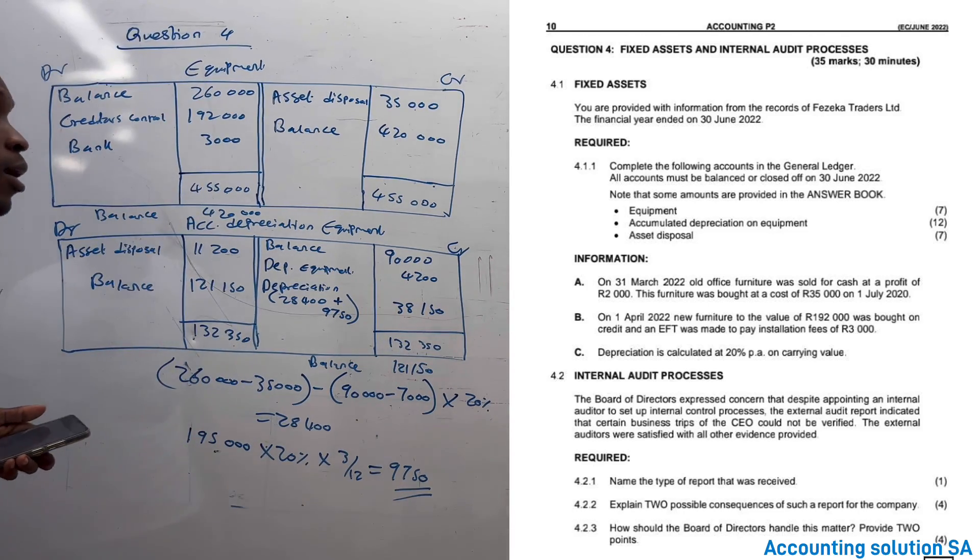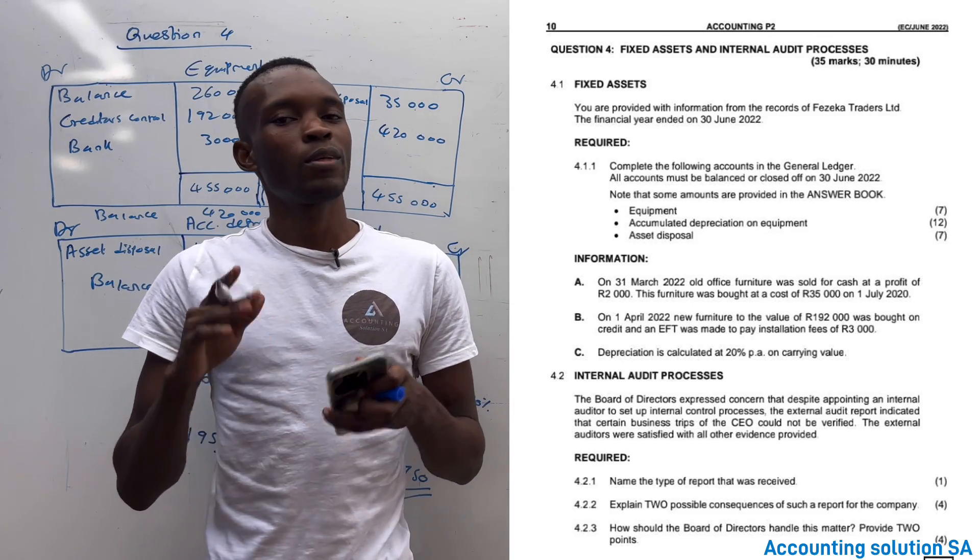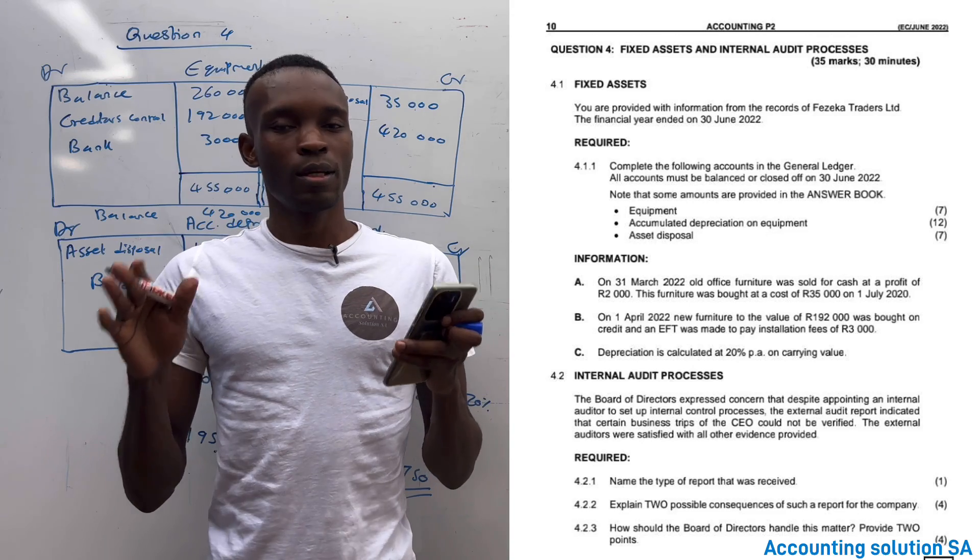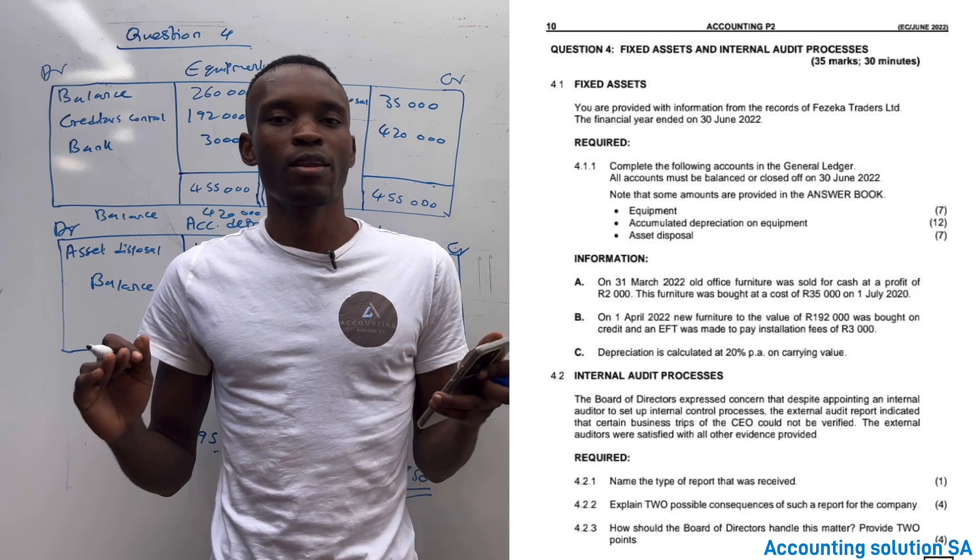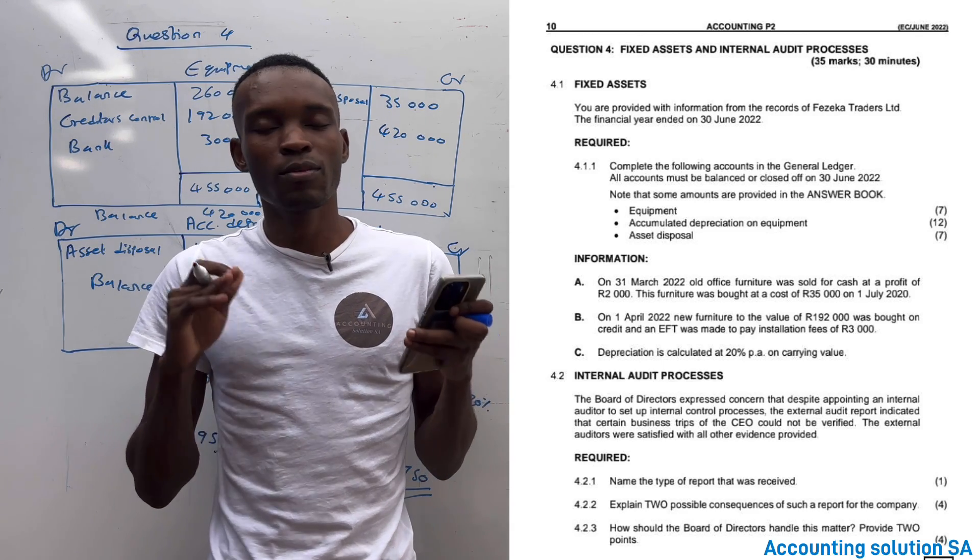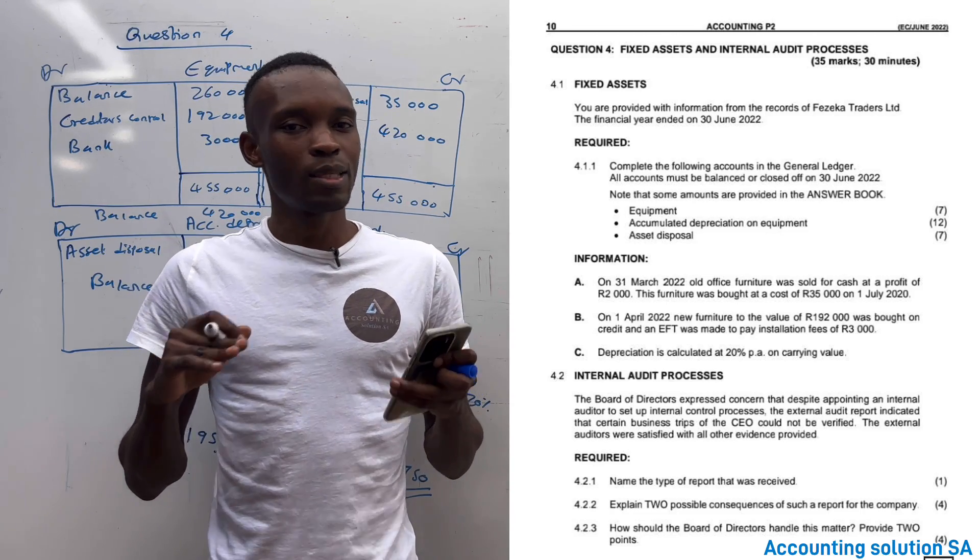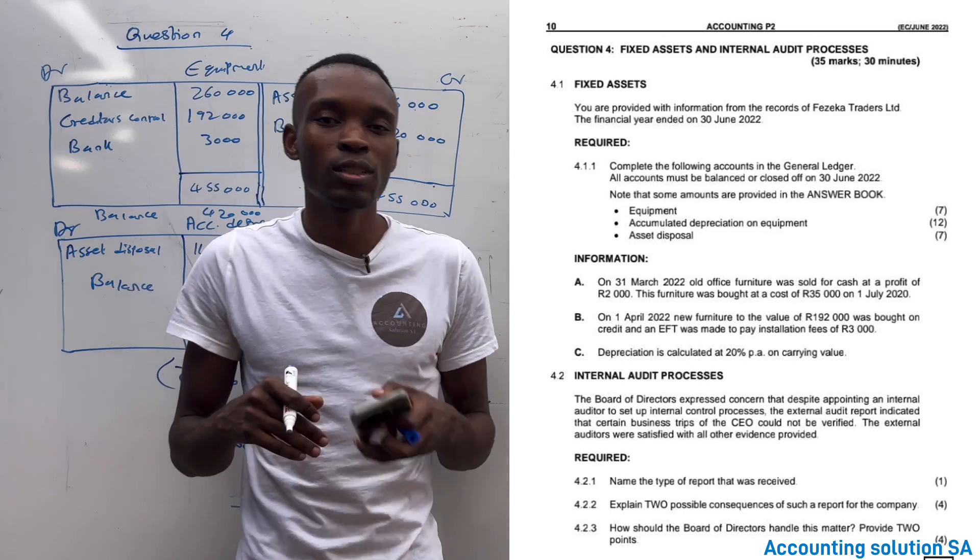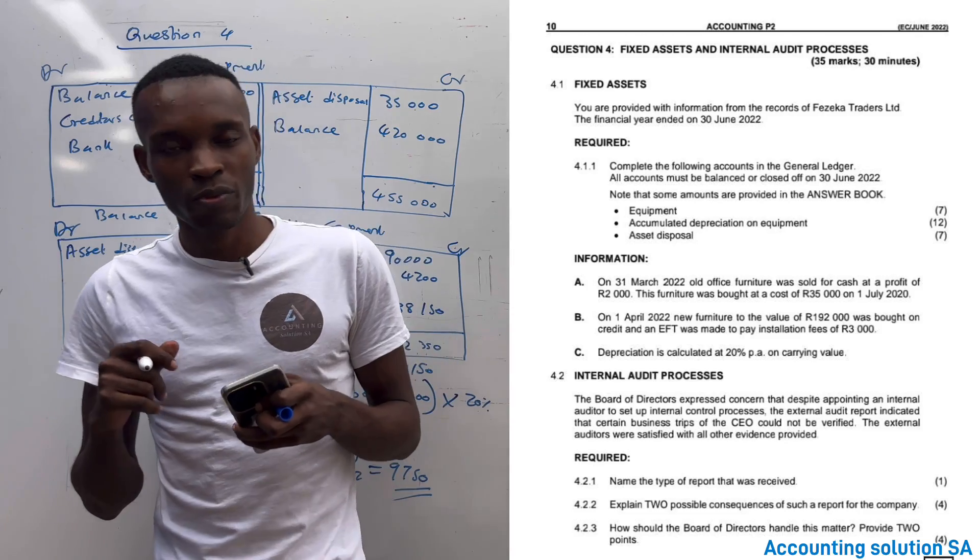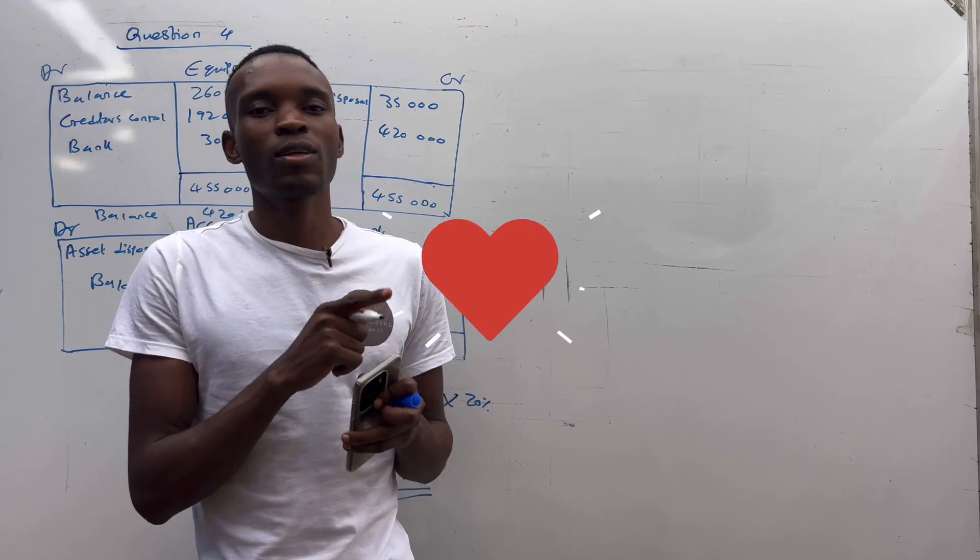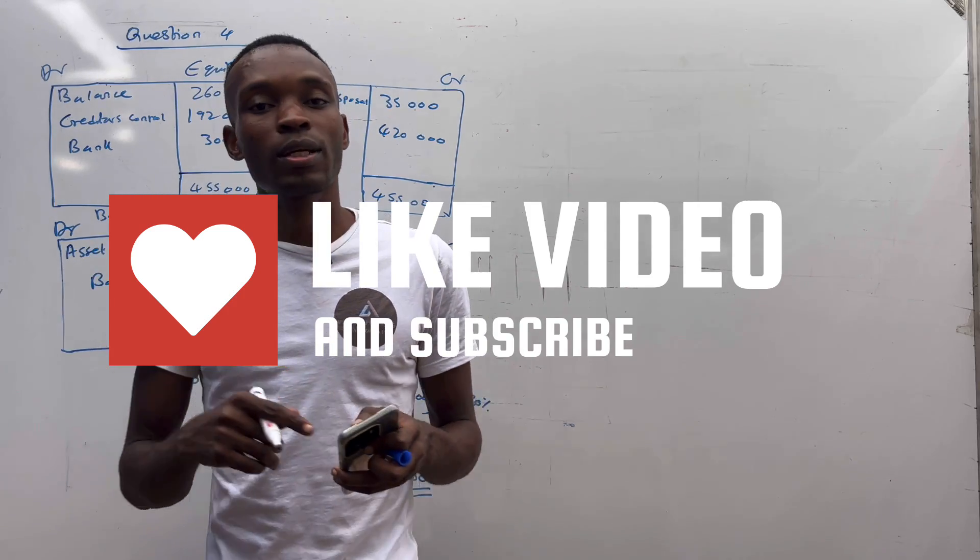Just like that, so this is how we do it, Grade 11. So make sure that you subscribe, guys, and also those who want to join our extra class, please, the class is only 600 rand per month. Let's make sure that you join so that every Saturday we're going to attend a live class together. If you have any question, you're going to ask me on WhatsApp. WhatsApp is only for those who are attending our extra class, guys, because I won't be able to answer the whole country, because people who are watching Accounting Solution SA, they are more than half a million, so it's a lot of people. So yeah, I'm going to see you on the next one, guys. Don't forget to subscribe so that when I post Grade 12 videos, you're just going to get them. See you.